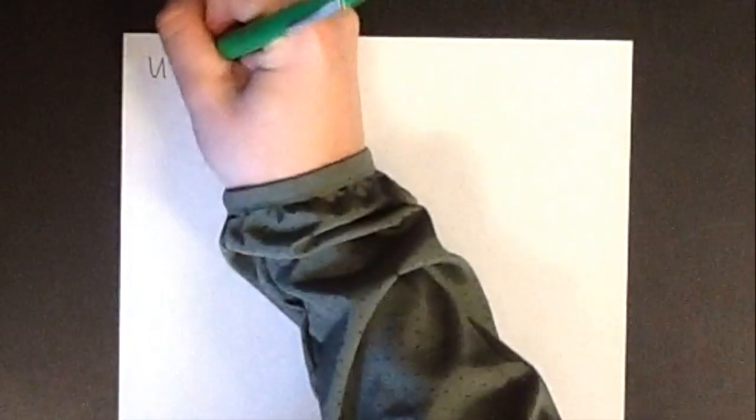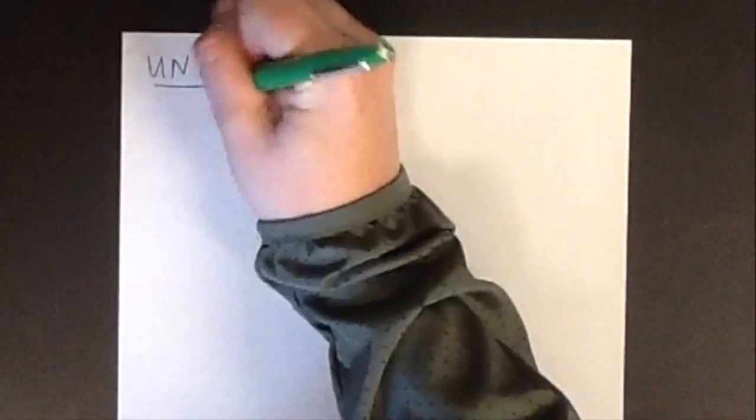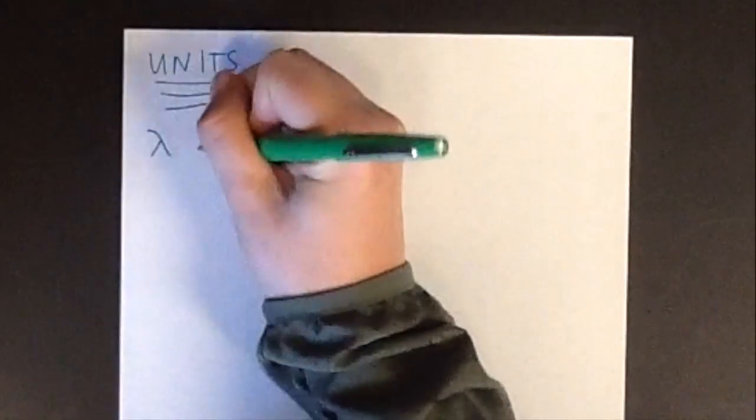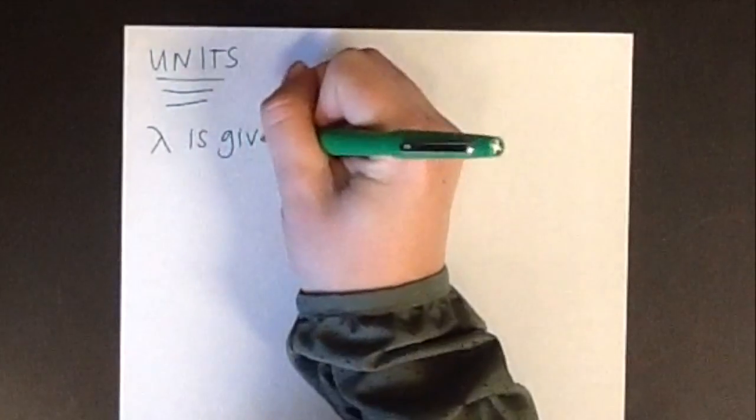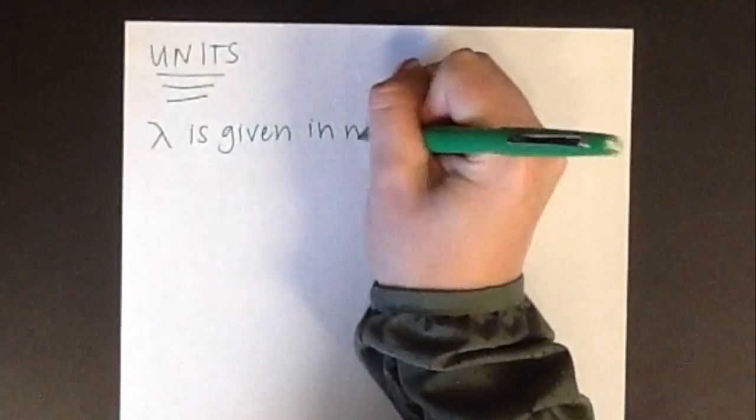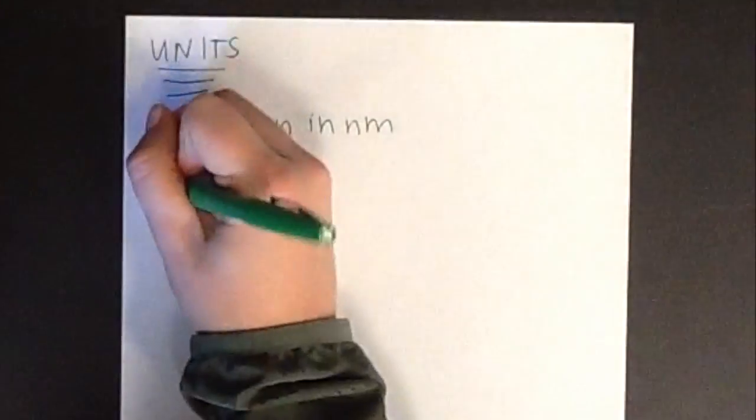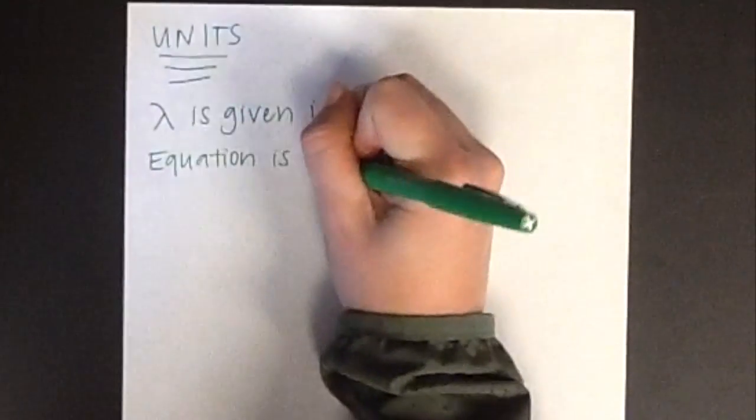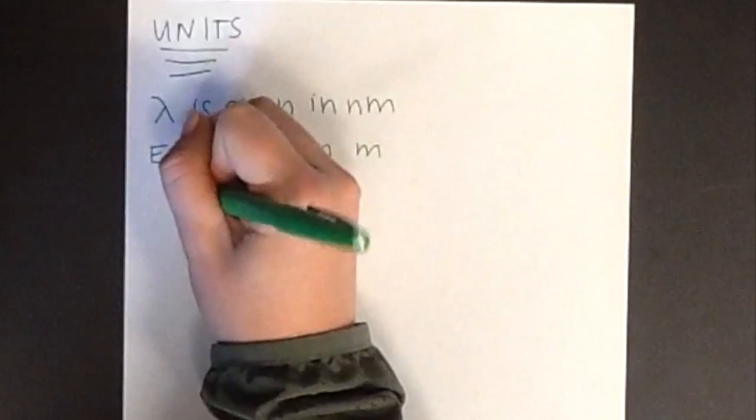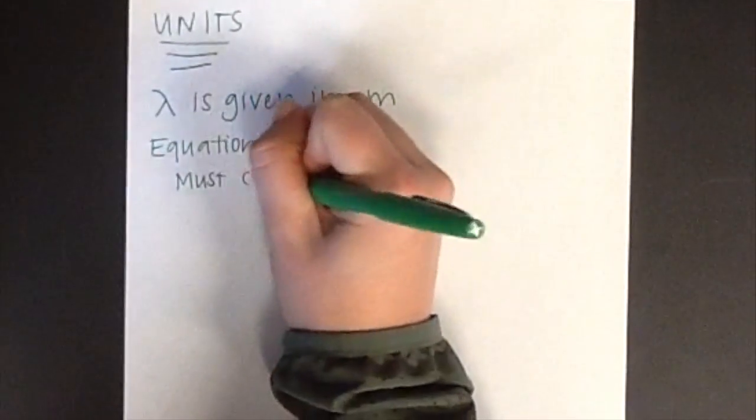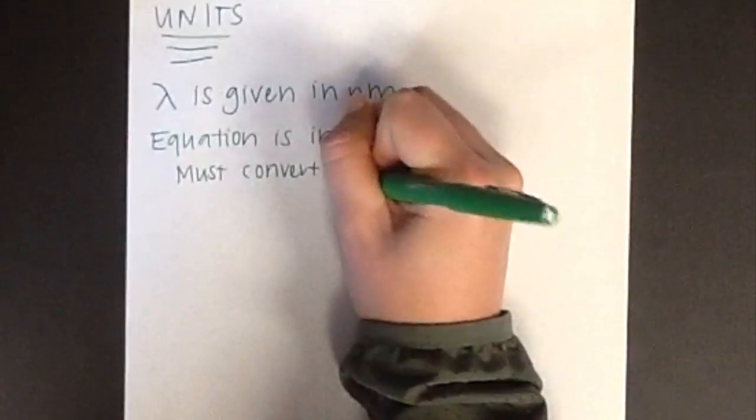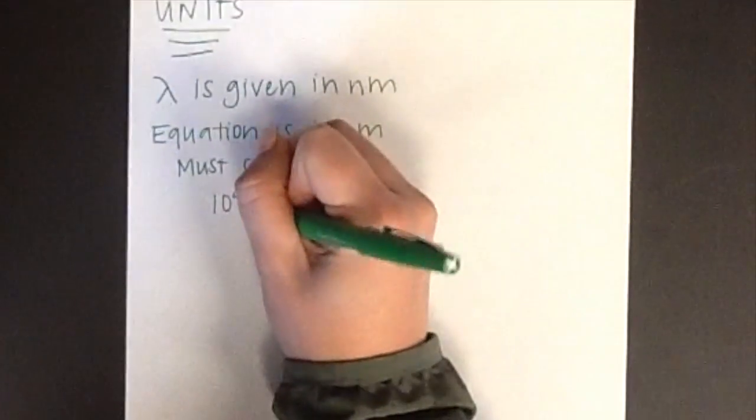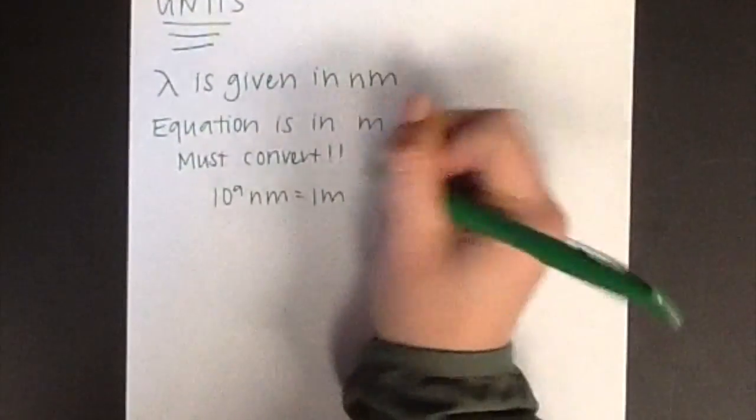When calculating these values, always remember to pay attention to the units. Another important thing to remember is the conversion between meters and nanometers. Sometimes your wavelength will be given in nanometers. The constant for speed of light is in meters per second. In order to properly calculate the energy, you must convert nanometers into meters.